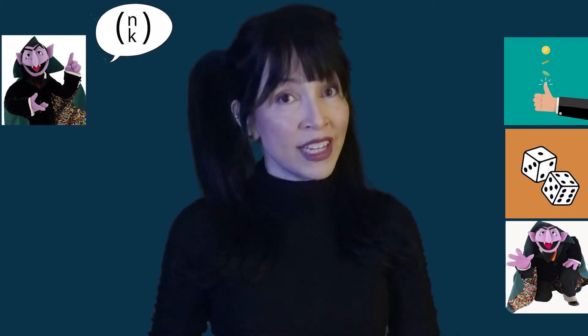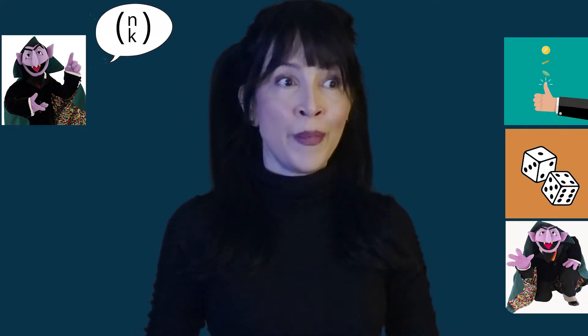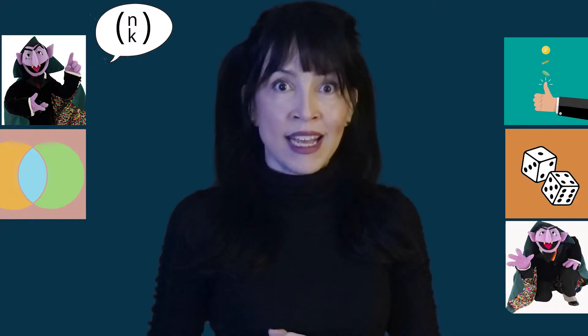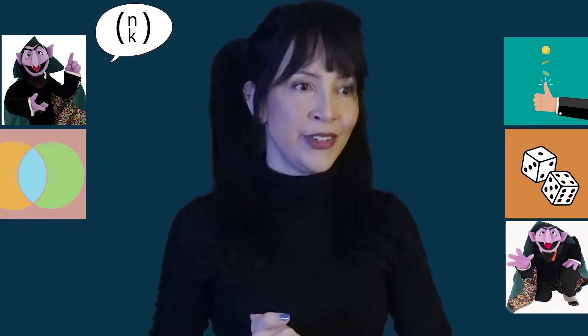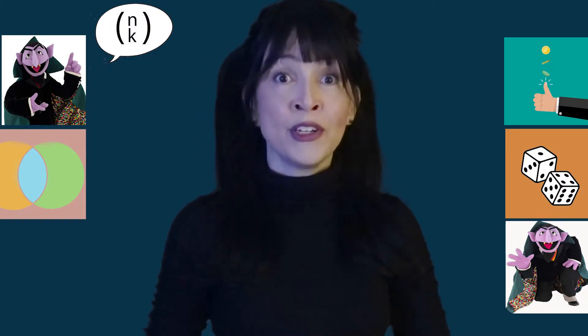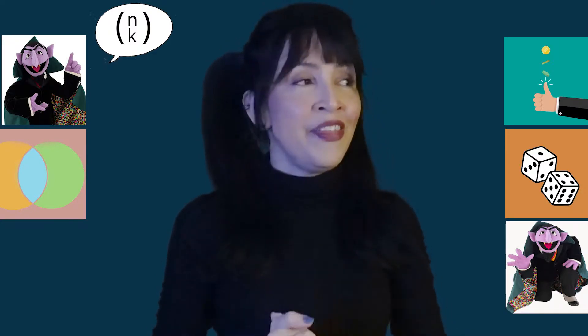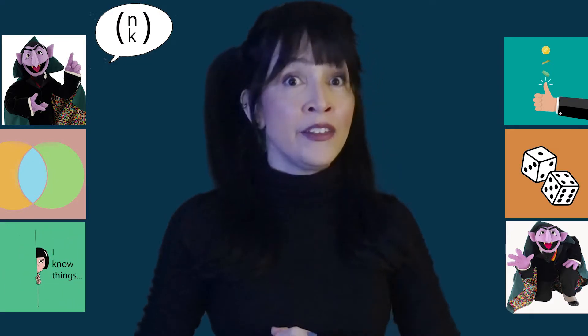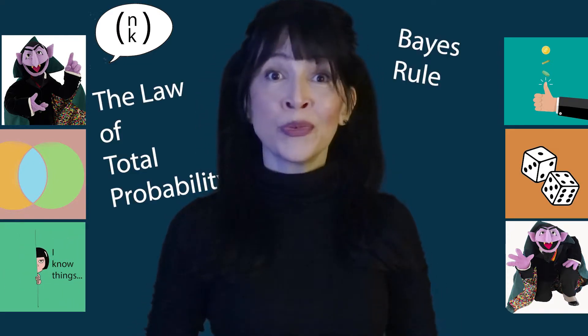So what are you going to learn in here? It's going to be really basic. We're going to start by flipping a coin, then maybe rolling a die, and talk about basic probabilities you can compute through counting. Then we'll talk about more advanced ways to count things, Venn diagrams and how they're actually useful, and then conditional probability, the law of total probability, and Bayes rule.